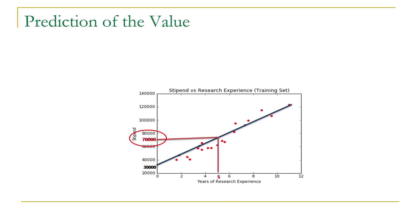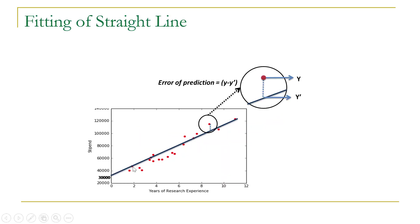By having this straight line we can predict the value of stipend for any given value of research experience. For example, if we wish to predict the value of stipend for a researcher having 5 years of research experience, we can find out that value by drawing a vertical and horizontal line over this straight line. All predicted values will be found on the basis of this straight line, while all the scattered data points indicate the actual values. So each dot indicates an actual value while the corresponding value on the straight line indicates the predicted value. This difference between the predicted and actual value is indicated as error. Here actual value is y while the predicted value is y-hat; the difference between actual and predicted value is considered as error for that particular instance.